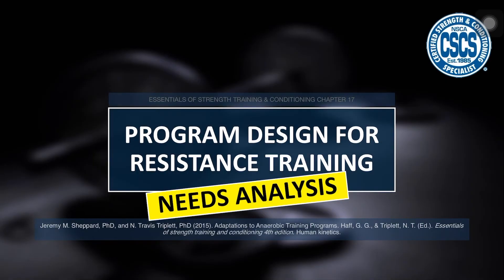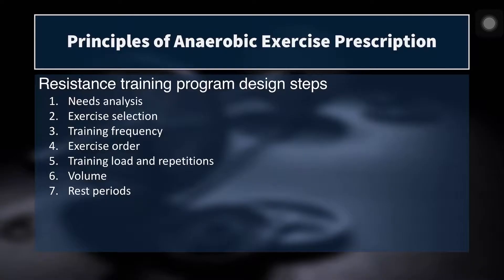This information comes from chapter 17 of Essentials of Strength Training and Conditioning, and this chapter was written by Drs. Shepard and Triplett. When designing a resistance training program we always need to follow seven steps. The NSCA puts them in this order, though it doesn't necessarily have to be in this order — this is definitely a good place to start if you are new to programming resistance training. In this video in particular, we are covering the needs analysis.